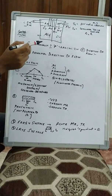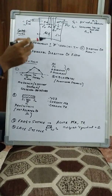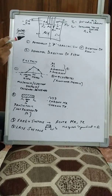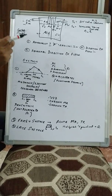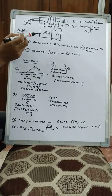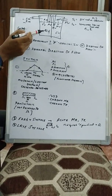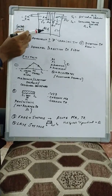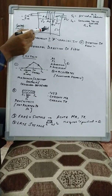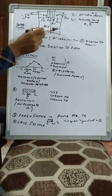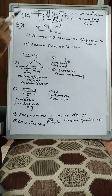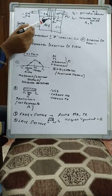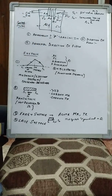S2, or heart sound 2, occurs due to closure of the semilunar valves. Semilunar valves are the valves that allow blood to go from the right ventricle to the pulmonary circulation or from the left ventricle to the aortic circulation — that means the pulmonary valve and the aortic valve.